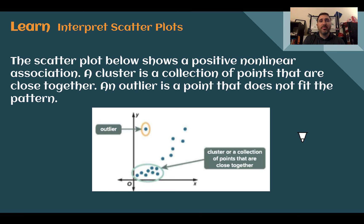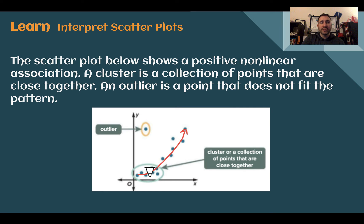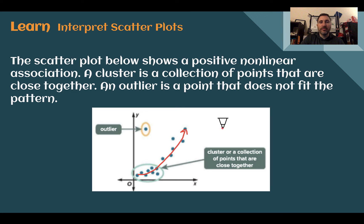The scatter plot below shows a positive nonlinear association — we can see it's nonlinear because it's starting to curve. In that association there is what's called a cluster: a bunch of points that are close together, all ending up about in the same place. There is also one point that is way away from everything else — that is called an outlier. If you have one, two, or three points that are way away and not close to the trend of the dots, those would be outliers.